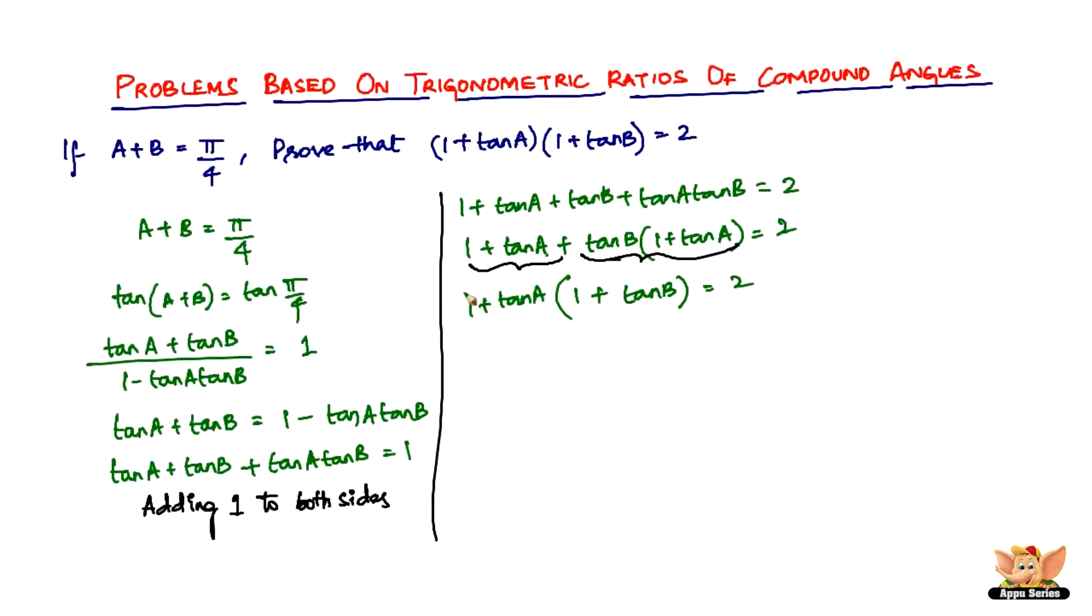Just use a bracket: 1 plus tan A into 1 plus tan B equals 2, and we've got the RHS, the entire thing. That's all we have to do here.